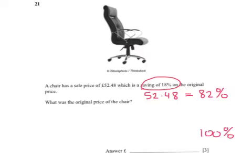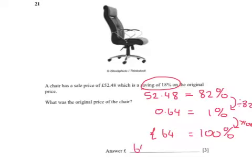And the easiest way to do that is to initially divide by 82 to find 1%. And if we do that, we get 0.64. Then we are going to multiply by 100 to find what the 100% is, finding £64 to be our answer. Thanks for watching.